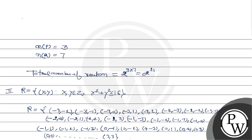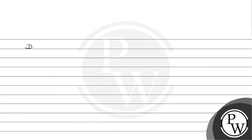So the domain is {plus minus 3, plus minus 2, plus minus 1, 0}. Okay, I hope you understand well. Best of luck, thank you.